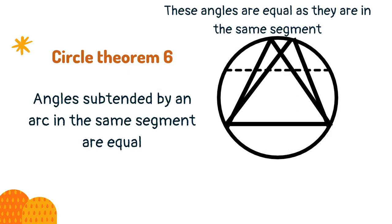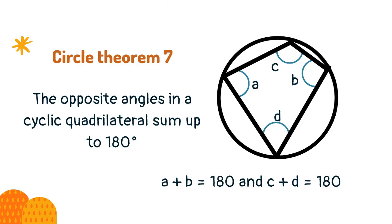Theorem 6: angles subtended by an arc in the same segment are equal. Theorem 7: the opposite angles in a cyclic quadrilateral sum up to 180 degrees.